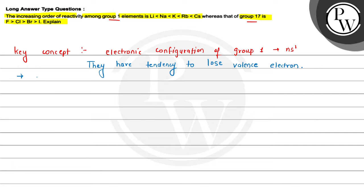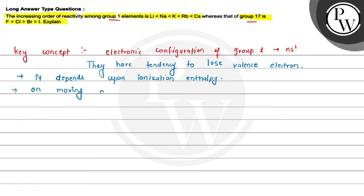The tendency to lose the valence electron depends upon ionization enthalpy. Ionization enthalpy is the energy required to remove the outermost valence shell electron from any isolated gaseous atom. On moving down the group, ionization enthalpy decreases.